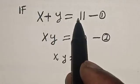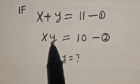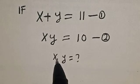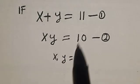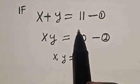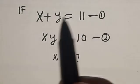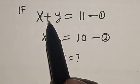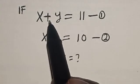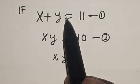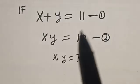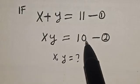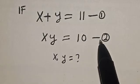If x plus y is equal to 11 and xy is equal to 10, what is the value of x and what is the value of y? Hi everyone, welcome to my class. In this class, we want to find the value of x and y from this given equation. x plus y is equal to 11, which is equation 1, and xy is equal to 10, which is equation 2.